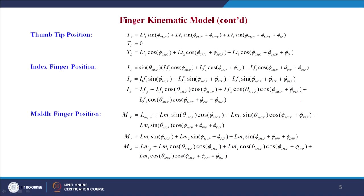Now going to the forward kinematic equation of these three finger tips. For the thumb it is Tx and Tz, where Ty is 0 because it is going in a plane, and similarly for the index and middle finger we have the 3 x, y, z coordinates of the finger tip because of the 4 degrees of freedom including the abduction-adduction. Here are the kinematic equations which relate the joint angle to the finger tip position.